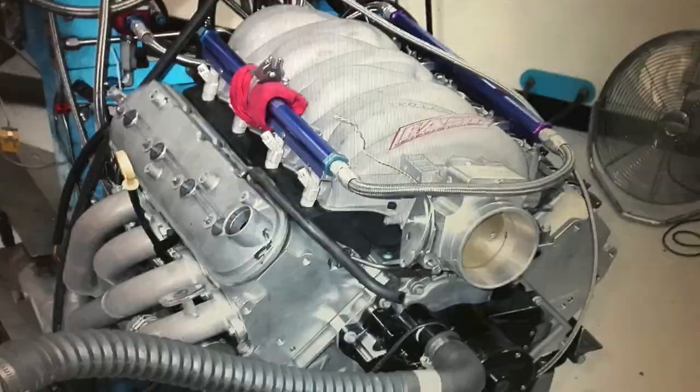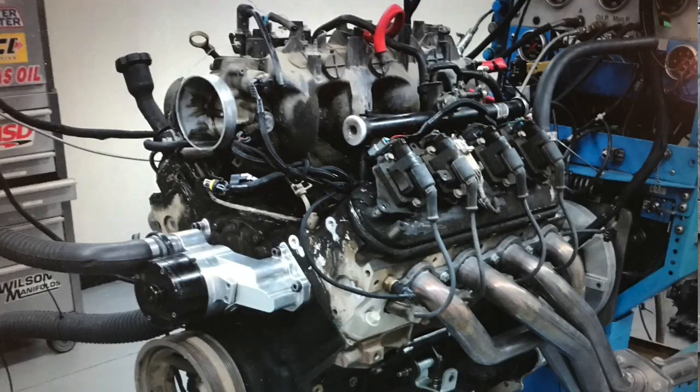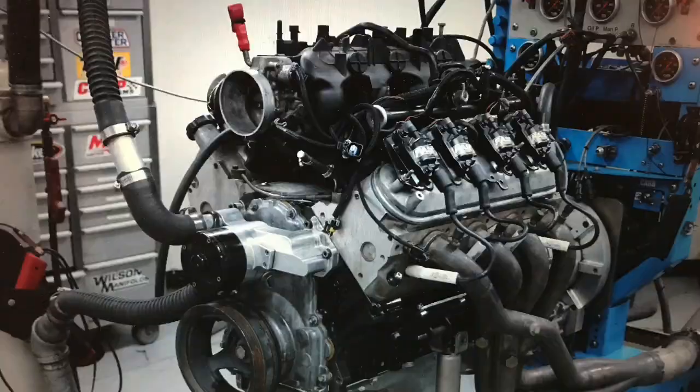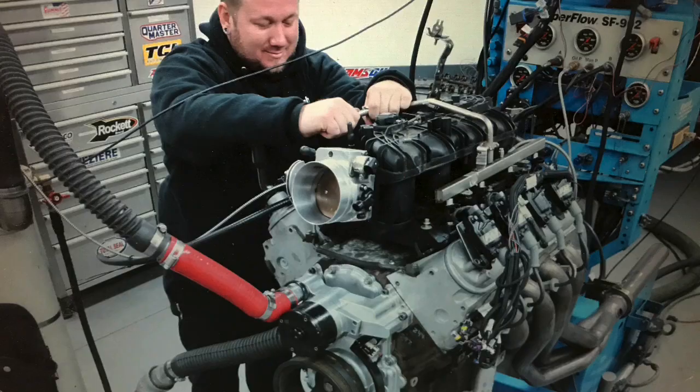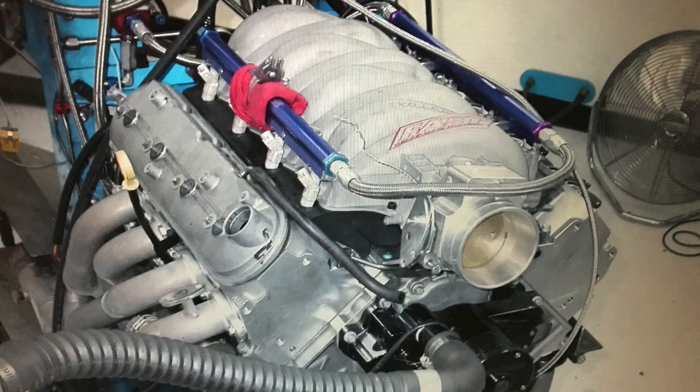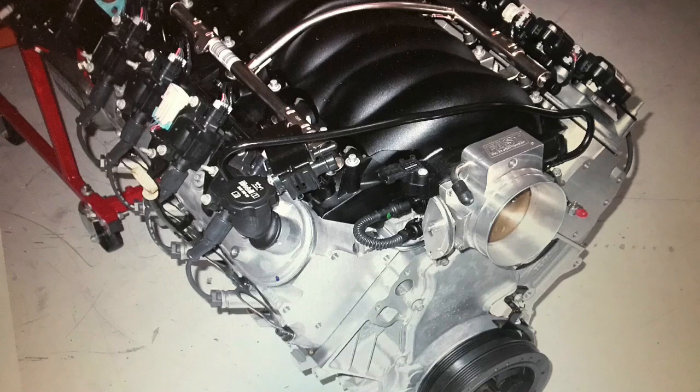In this video, we're going to take a look at some dyno-proven 500 horsepower LS combinations. Back in part one, if you haven't seen that video, check it out. We showed you how to make 400 horsepower out of a 4.8, a 5.3, and a 6.0. This time around, we're going to step it up to 500 horsepower. It's a little more difficult, but we're going to show you what we did to make 500 horsepower out of a 4.8, 5.3, and 6.0. And because guys were complaining, I'm going to throw in the 5.7 liter LS1 and the 6.2 liter LS3.